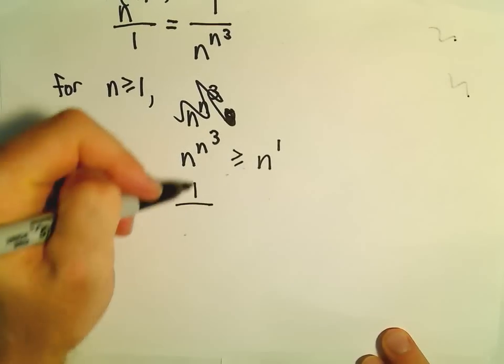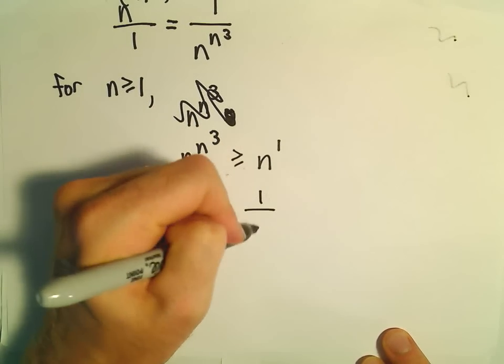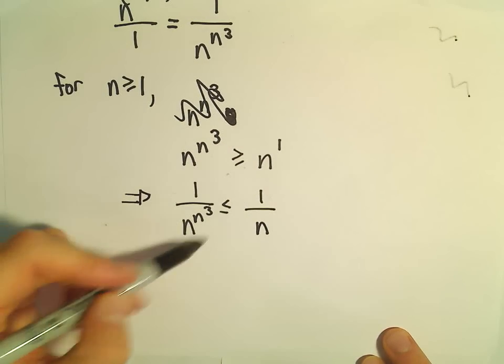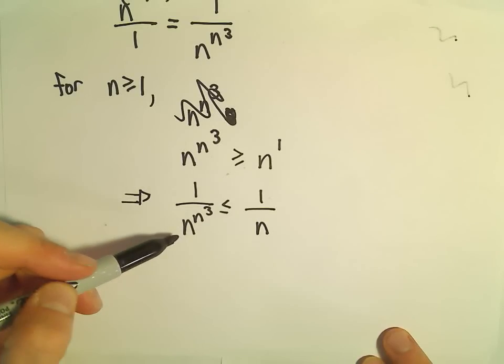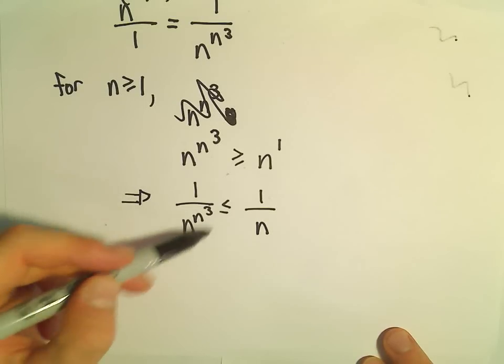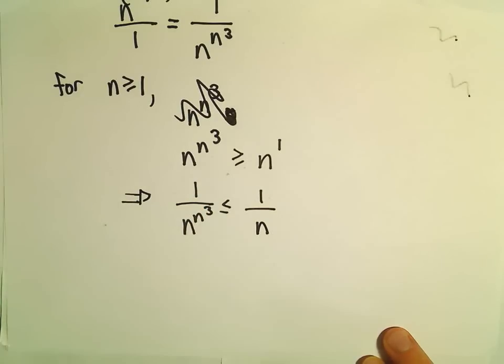Well, that tells us that if we take 1 over this number, that's going to be less than or equal to 1 over n. The fraction on the left has a bigger denominator, and if a fraction has a bigger denominator with the same numerator, that fraction is going to be smaller.